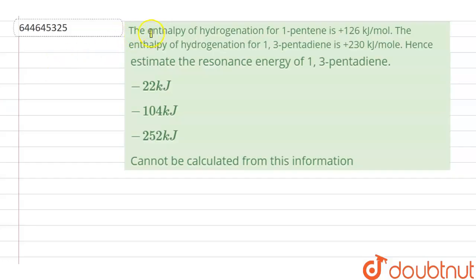The question given here is the enthalpy of hydrogenation for 1-pentene is plus 126 kJ per mole. The enthalpy of hydrogenation for 1,3-pentadiene is plus 230 kJ per mole. Hence, estimate the resonance energy of 1,3-pentadiene. Options are minus 22 kJ, minus 104 kJ, minus 252 kJ. Fourth is cannot be calculated from this information.